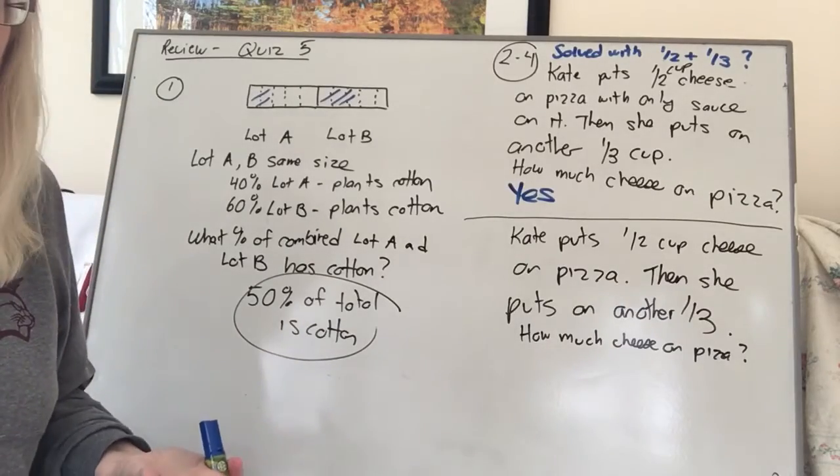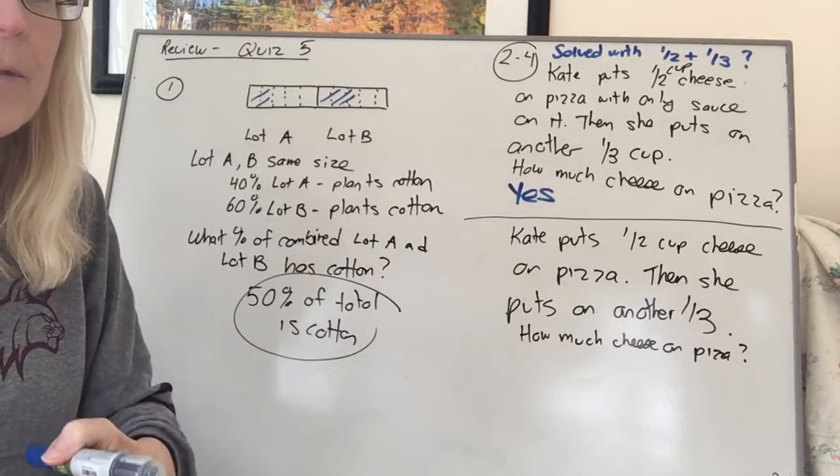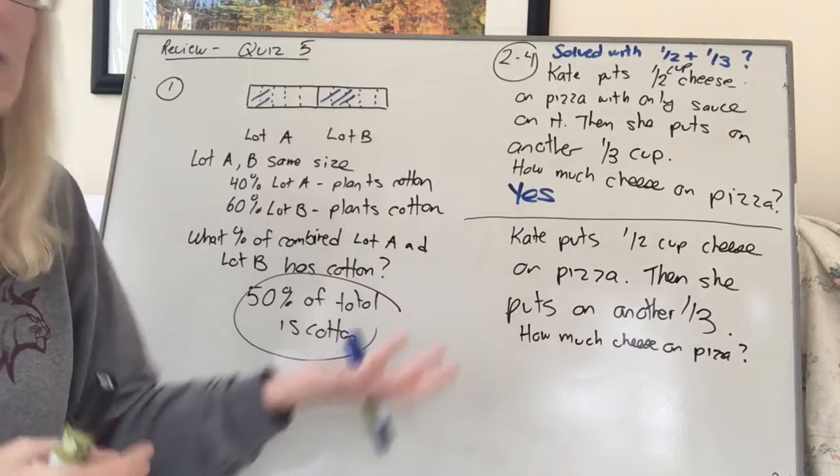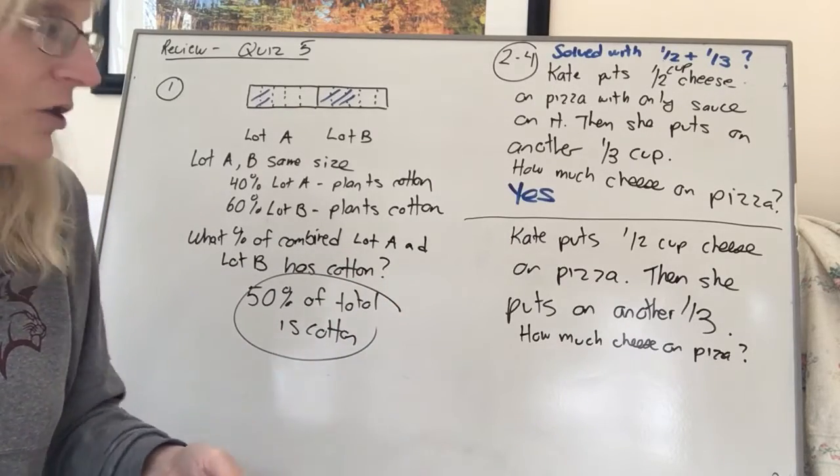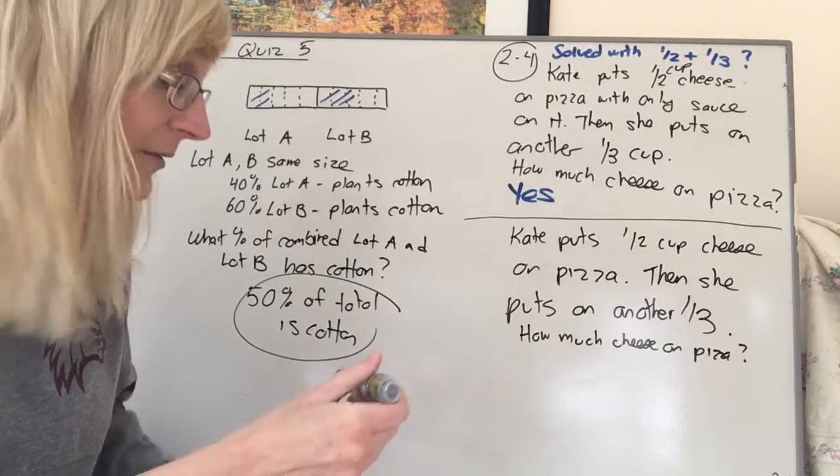Like this problem says she puts on another 1/3 cup. This says she puts on another third. What do they mean by third? It's unclear. Do they mean a third of a cup? Or do they mean a third of what was already there? Like a third of a half? You don't know. So this one would be no, unclear.